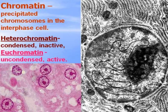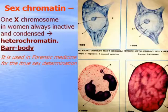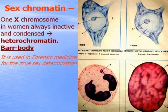Euchromatin is the uncondensed active part of chromatin, visible at light microscopy and electron microscopy level. Heterochromatin is condensed chromatin — you can see the grains. Sex chromatin: it is one X chromosome in a woman, because it is always inactive and condensed. You can find this heterochromatin or Barr body in any nucleus, but it is especially visible in the neutrophil segmented leukocyte of blood. This feature is used in forensic medicine for true sex determination.